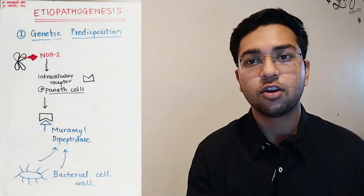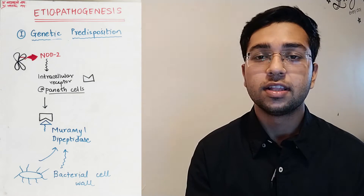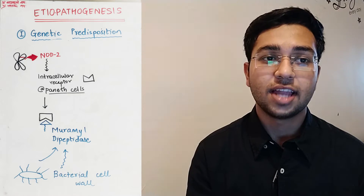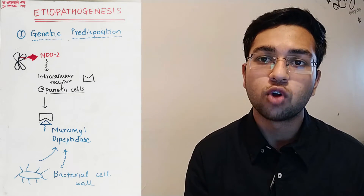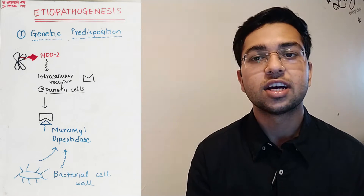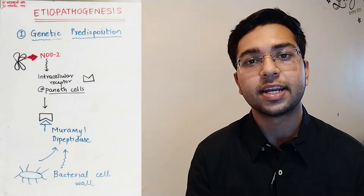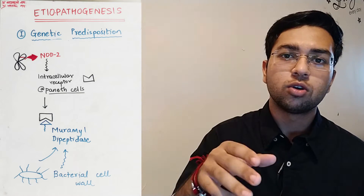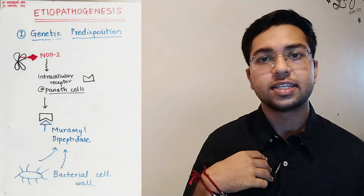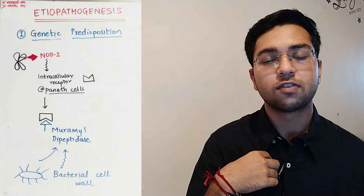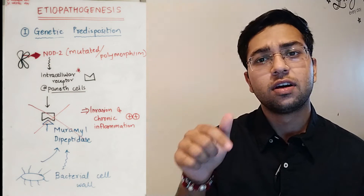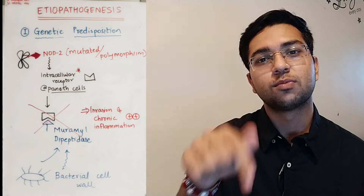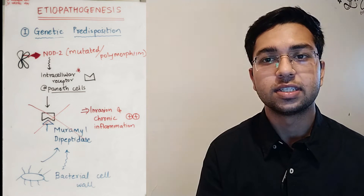This Paneth cell has an intracellular receptor for a ligand. This ligand is muramyl dipeptide, which is a component of the bacterial cell wall. This implies that NOD2 plays a protective role in our intestine and protects us from bacteria. If this gene is mutated, then the person is more susceptible to inflammatory bowel disease.